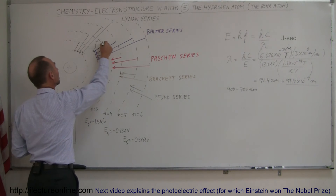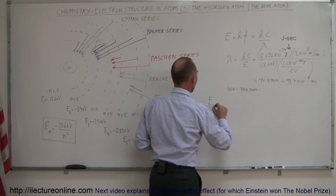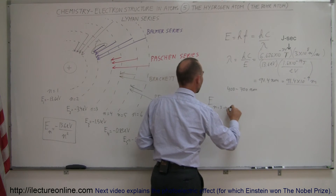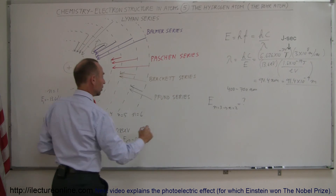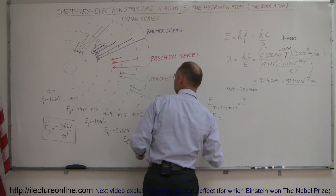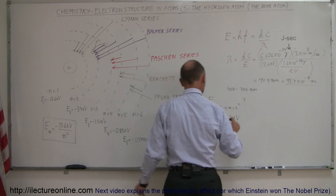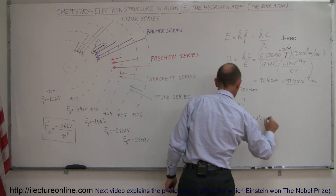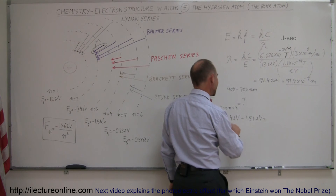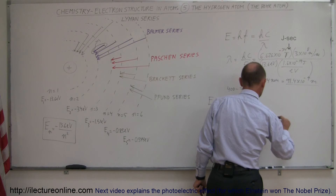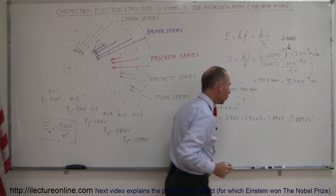To find the energy released by the jump from n=3 down to n=2, we compute the difference: delta E equals the energy of the second level minus the energy of the third level, which is minus 3.4 minus (minus 1.511) electron volts. That gives us 1.889 electron volts.